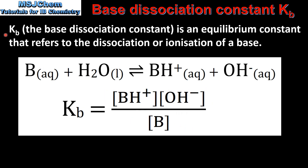Next we look at Kb. Kb is an equilibrium constant that refers to the dissociation or ionization of a base. In this reaction we have a base, B, reacting with water to form the conjugate acid of the base and the hydroxide ion. Here we have the expression for the base dissociation constant. In the numerator we have the concentration of the conjugate acid of the base and the concentration of the hydroxide ions. In the denominator we have the concentration of the base. And once again you will notice that water does not appear in the expression.